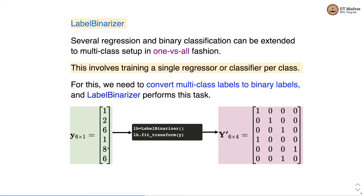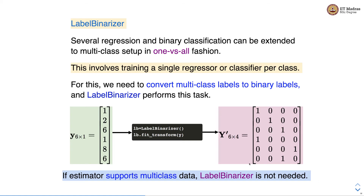The unique values are 1, 2, 6 and 8, so there is a column corresponding to each unique value. The first column corresponds to value 1, the second to value 2, the third to value 6, and the fourth to value 8. If you have an estimator that already supports multi-class data, you need not use label binarizer. Label binarizer is needed only if you want to extend regression and binary classification algorithms that do not support multi-class setup.